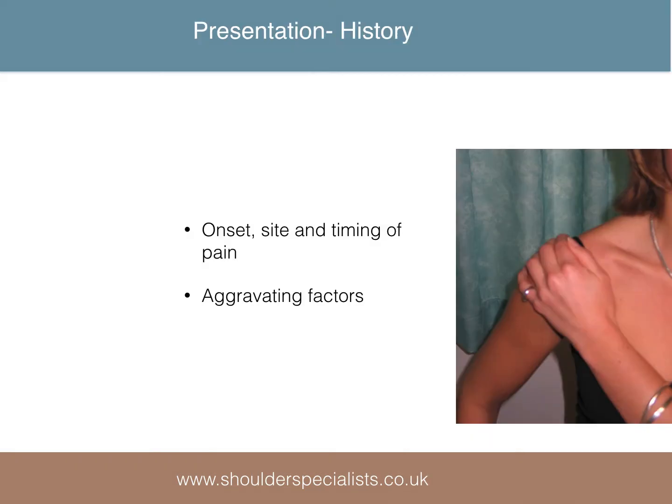In the diagnosis of rotator cuff disease, we need to consider the onset, site and timing of the pain as well as aggravating factors. If we exclude significant one-off traumatic injury, a typical presentation would be of a gradual onset pain, often spontaneous or perhaps after some unaccustomed activity, and sometimes after what initially felt like a small muscle pull.